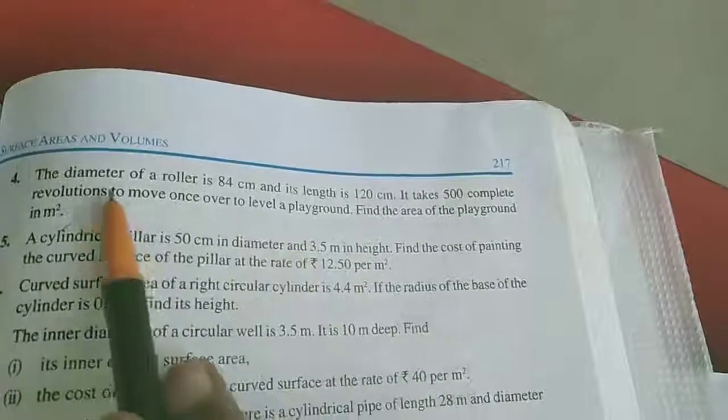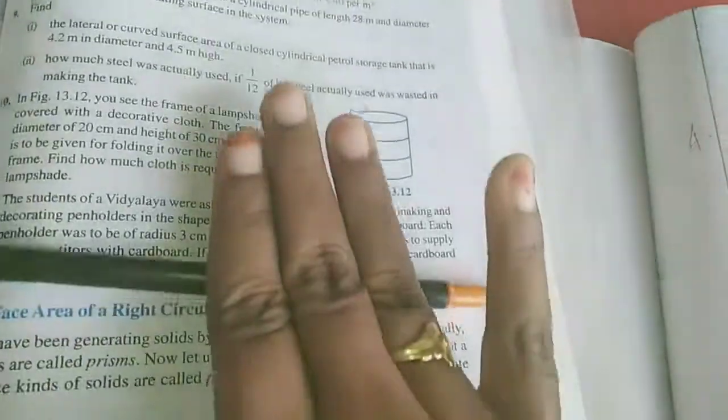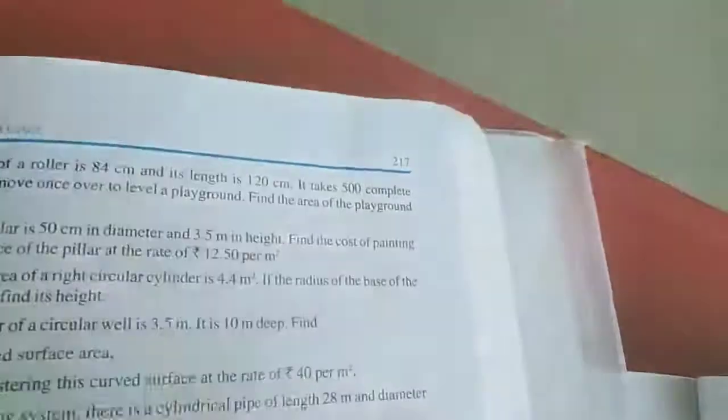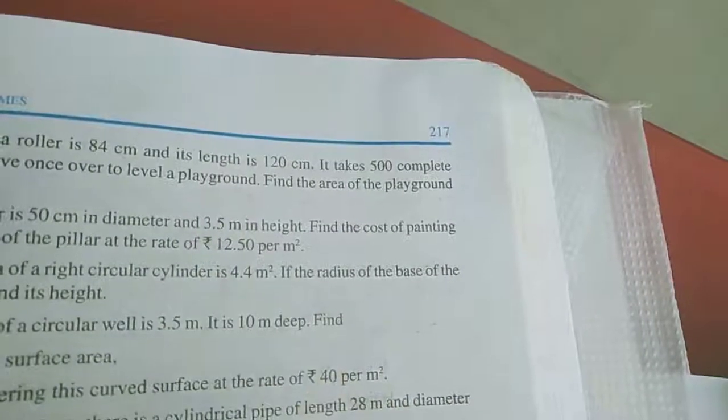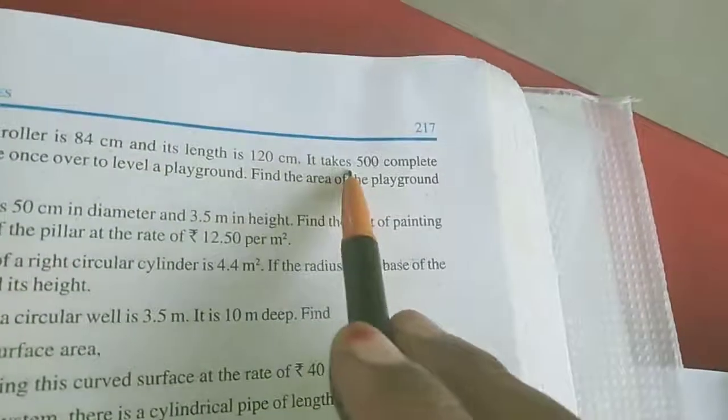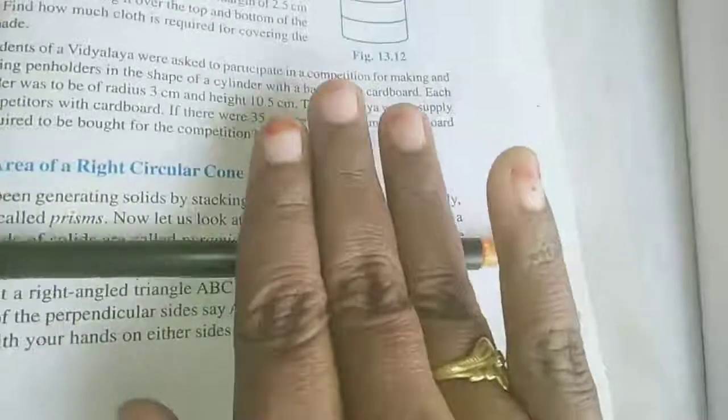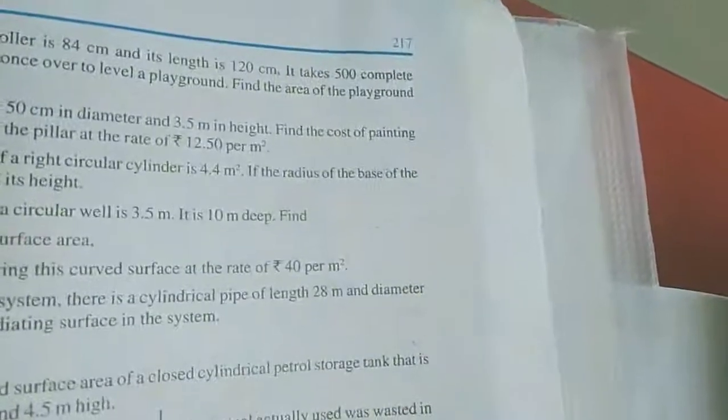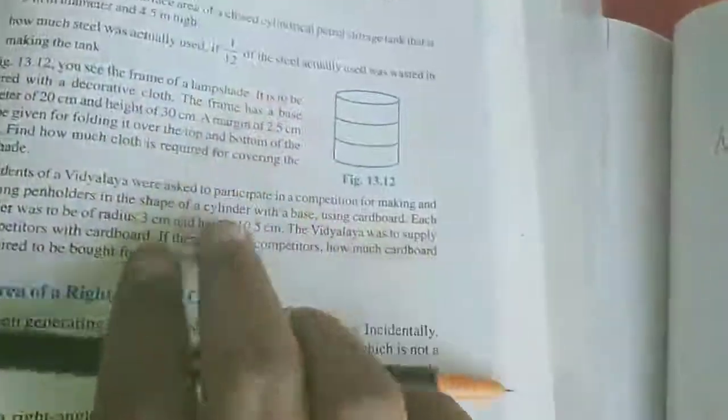Now I will explain in Tamil, just listen here. A roller - if this is the roller, it is cylindrical. The roller's diameter and length are given. The roller is a cylinder shape. It takes 500 complete revolutions. That is, it rolls 500 times. We need to find the curved surface area of the roller.